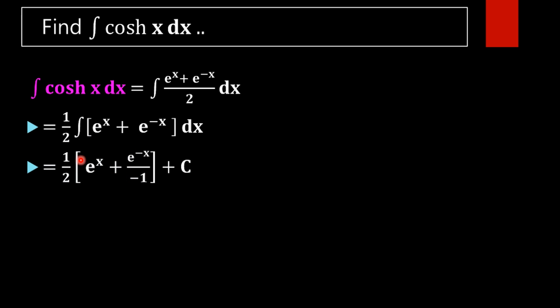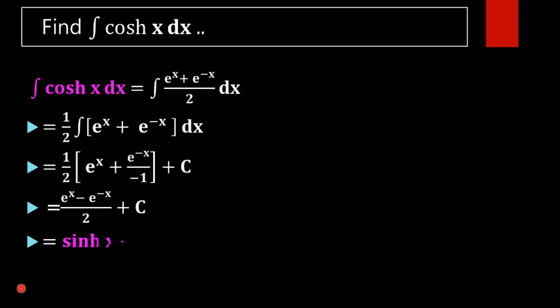This minus brings us to e raised to x minus e raised to minus x, whole divided by 2, plus c. This is hyperbolic sine of x, that is sinh x plus c. Therefore, the integral of hyperbolic cosine of x is hyperbolic sine of x plus c.